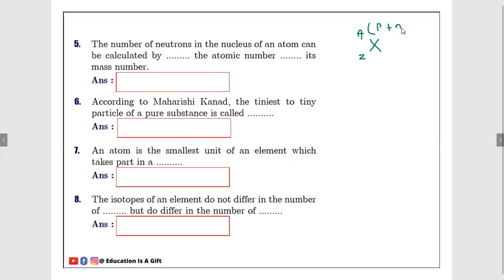In mass number, it is a combination of proton and neutron. The number of neutrons in the nucleus of an atom can be calculated by subtracting the atomic number from its mass number. So neutron, if you want to calculate, you need to subtract atomic number from mass number. Mass number is A, atomic number is Z. A minus Z, you will get neutron count.